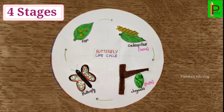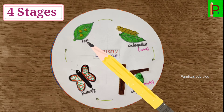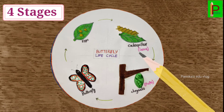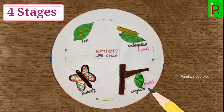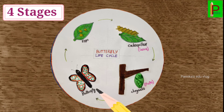The first stage is eggs. The second stage is caterpillar, which is also known as larva. The third stage is chrysalis, also known as pupa. And finally, the fourth stage is butterfly. These are the four stages in the life cycle of a butterfly.